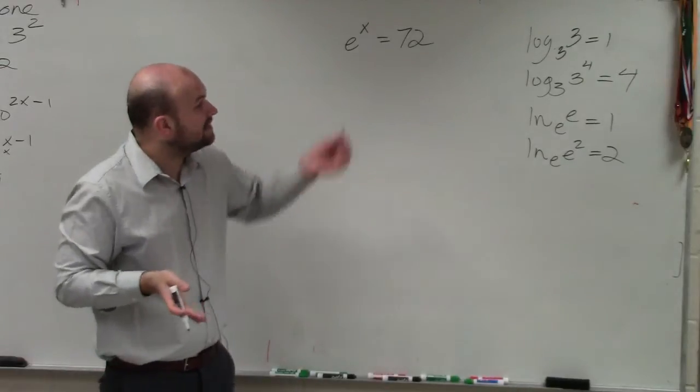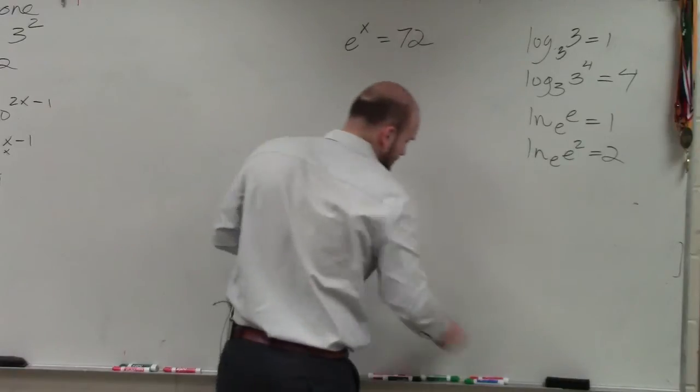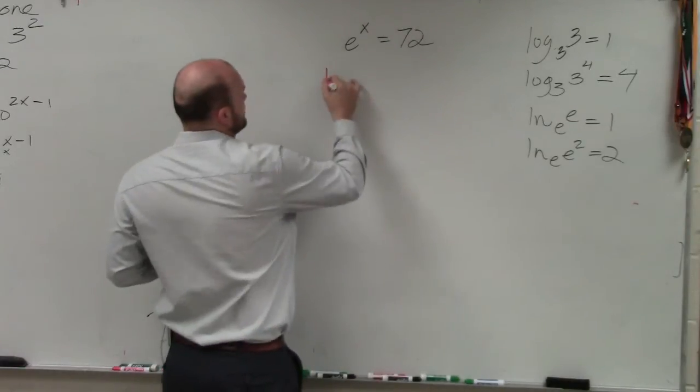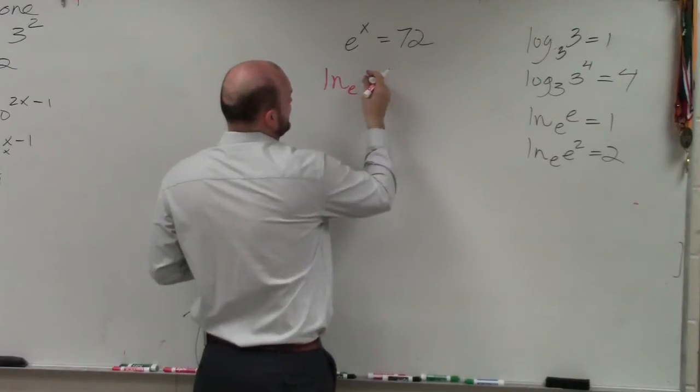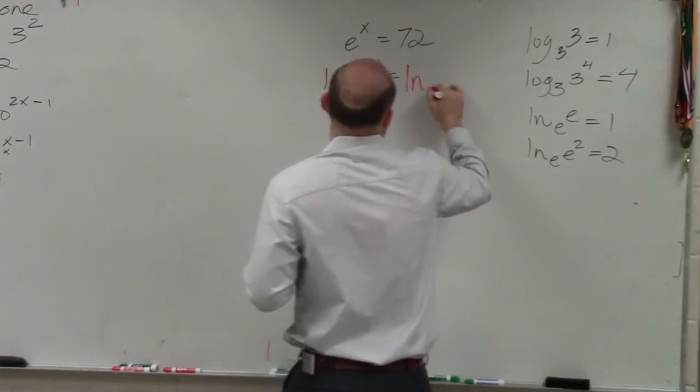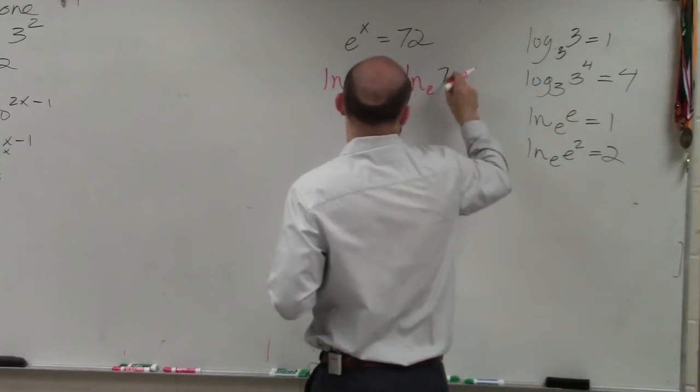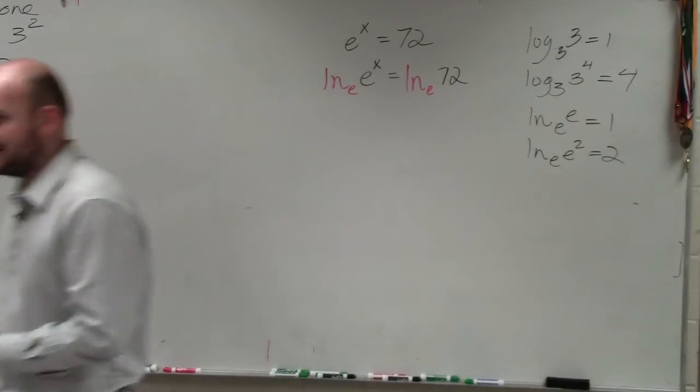So what I'm going to do in this case is if I want to get rid of this e, I can take the ln of both sides. And remember, there is an e there. We don't usually write it, but there is that e there. So what I did is I took the ln of both sides.